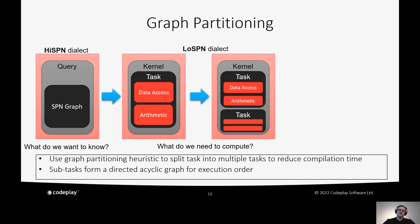The first step with our LowSPN dialect is graph partitioning. SPN models for complex workloads can grow very large, posing a massive challenge to compilation time. To reduce it, we perform graph partitioning using a heuristic to split one monolithic task into multiple tasks, each with data access and arithmetic wrapped in a kernel. The subtasks from the partitioner form a directed acyclic graph representing the execution order in which these tasks need to be executed.